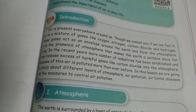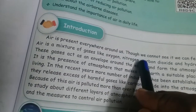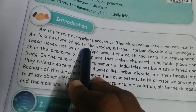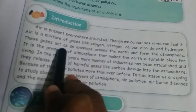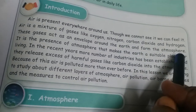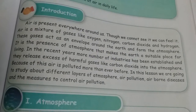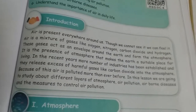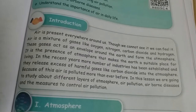Air is present everywhere around us. Though we cannot see it, we can feel it. Air is a mixture of gases like oxygen, nitrogen, carbon dioxide, and hydrogen. These gases act as an envelope around the earth and form the atmosphere. The air around the earth is called atmosphere.